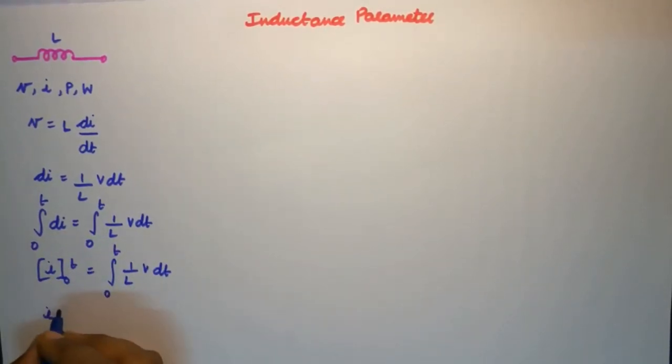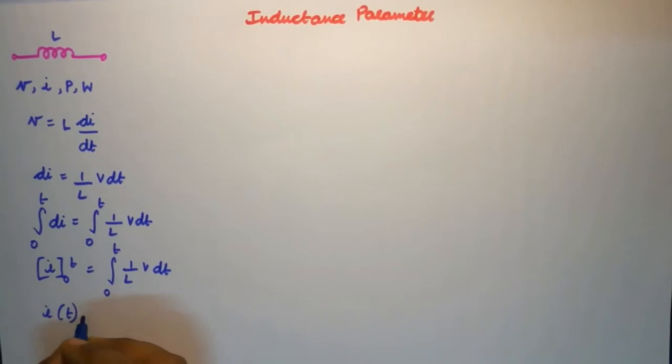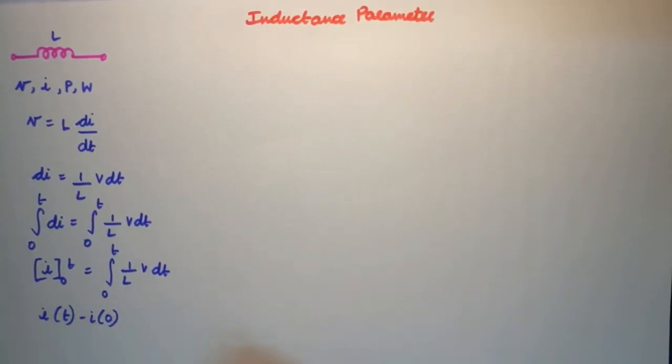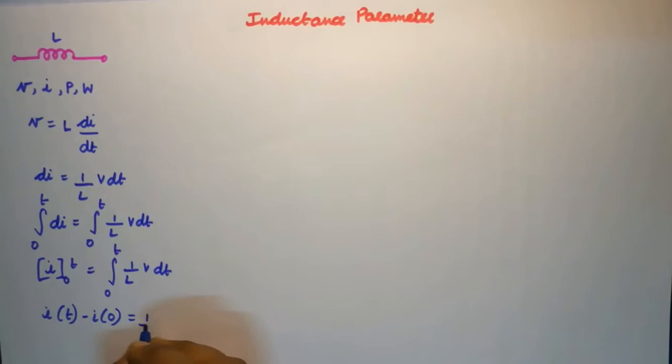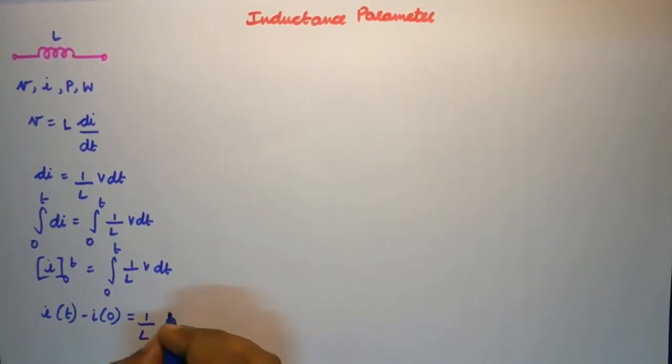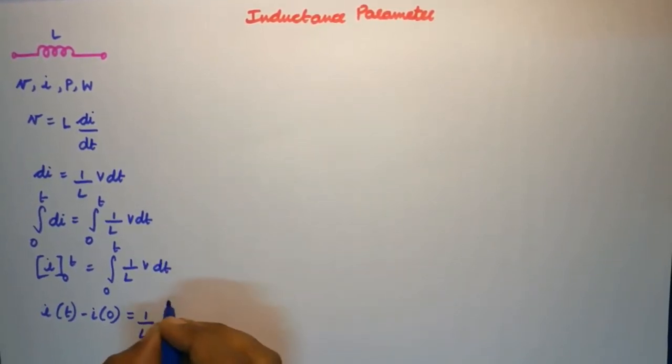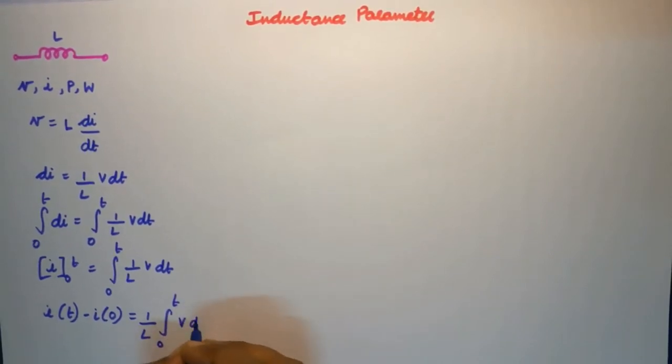So when we apply the limits on the LHS side we would get i of t minus i of 0 is equal to 1 by L which is constant. I am taking it outside my integration part, integral 0 to t v dt.